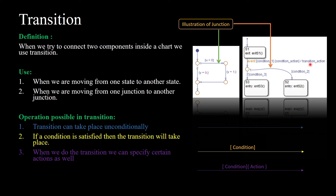The transition action happens when there is a transition occurring from one state to another. This is the format in which we can write the condition and transition, and this can be implemented both in stateflow as well as flowchart. This is how the transition looks and how it is used in a stateflow or flowchart.